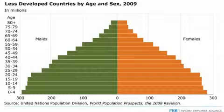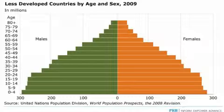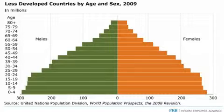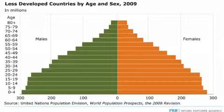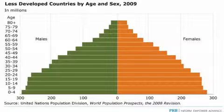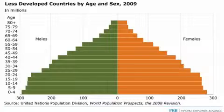Here we see a population pyramid of the developing countries of the world — those in Africa, Asia, Latin America, and parts of Oceania, what the United Nations calls developing countries. A pyramid is a bar graph; it's actually a kind of photograph of what a population looks like. On the left we have males, on the right females, in five-year age groups. What can you tell about these countries' future just by looking at the pyramid?